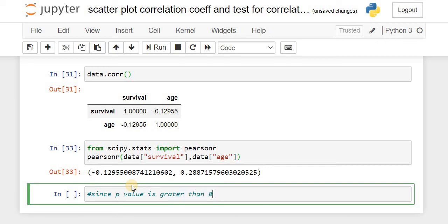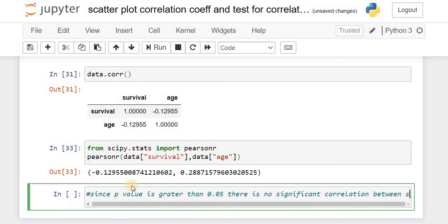Considering a level of significance as 0.05, which is the default value, we compare this with the p-value of 0.2887 (28.87%), which is more than our level of significance. The p-value lies in the acceptance region, meaning we fail to reject the null hypothesis. Thus, there is no significant correlation between survival and age.